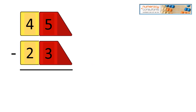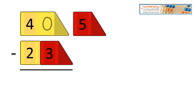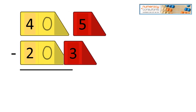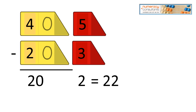45 minus 23. Again, we have 40 minus 20, which is 20, and 5 minus 3, which is 2. Put it together — the answer is 22.